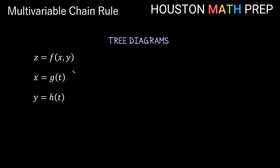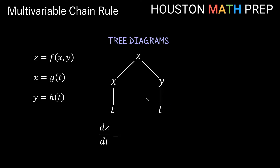In the case where z is a function of two variables x and y, and x and y are both functions of just one variable t, we want to find the derivative of z with respect to t. We set up our tree so z is at the top, branching to x and y, and then x and y both branch to their only variable t. Looking at the bottom row of our tree diagram, it only has a single variable t. Since the bottom row has only one variable, that tells us the derivative we seek is actually an ordinary derivative, so we write regular dz/dt.